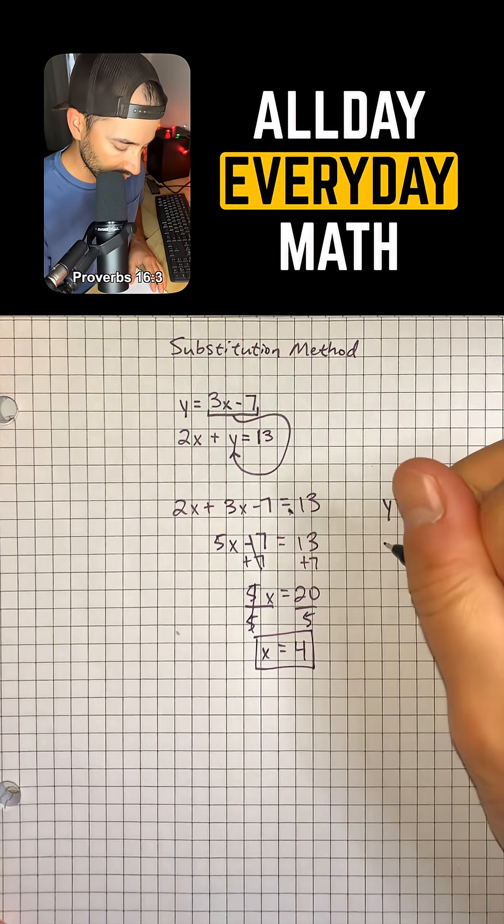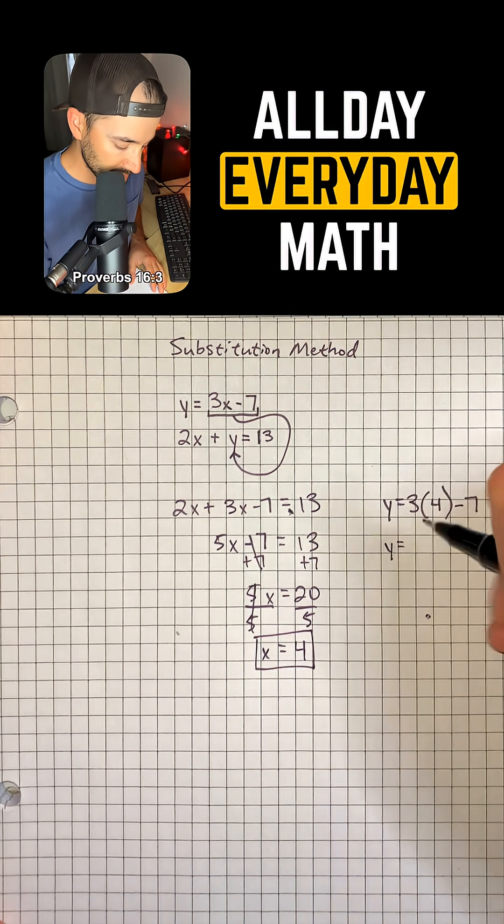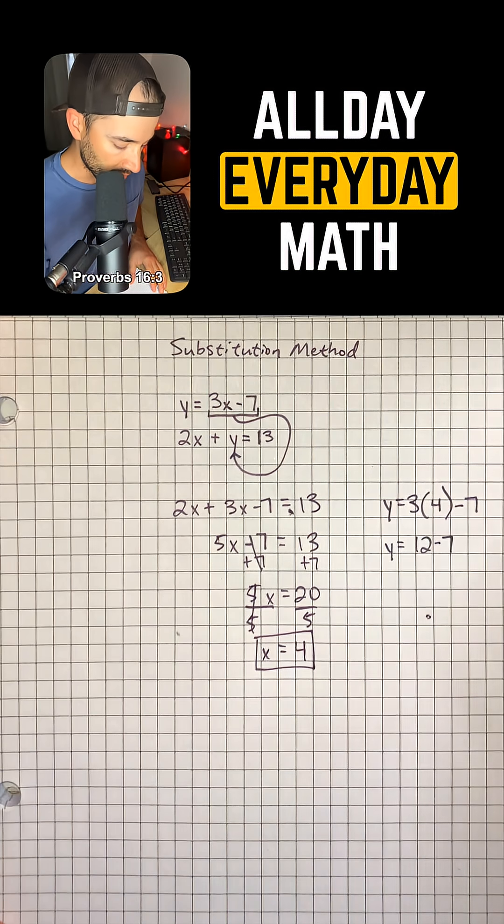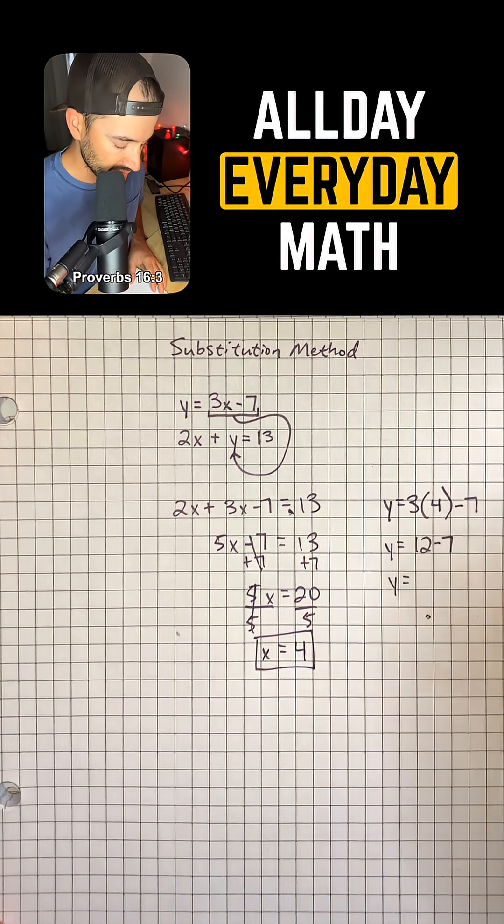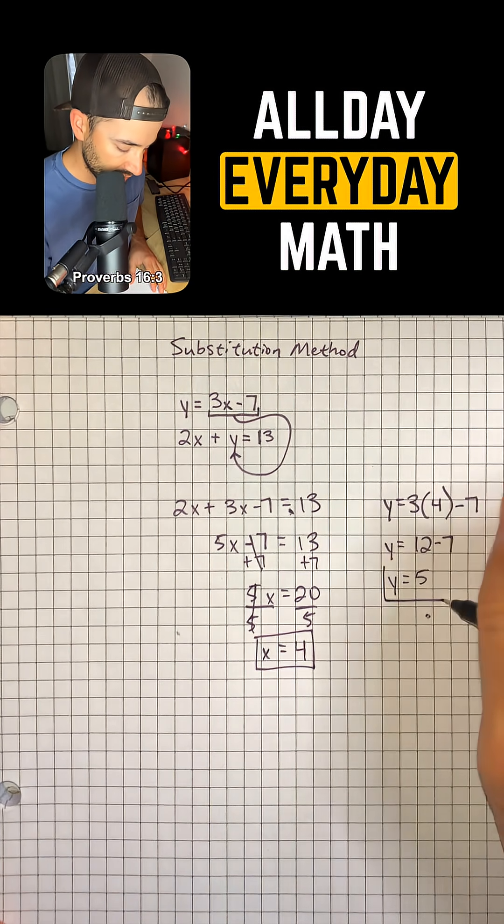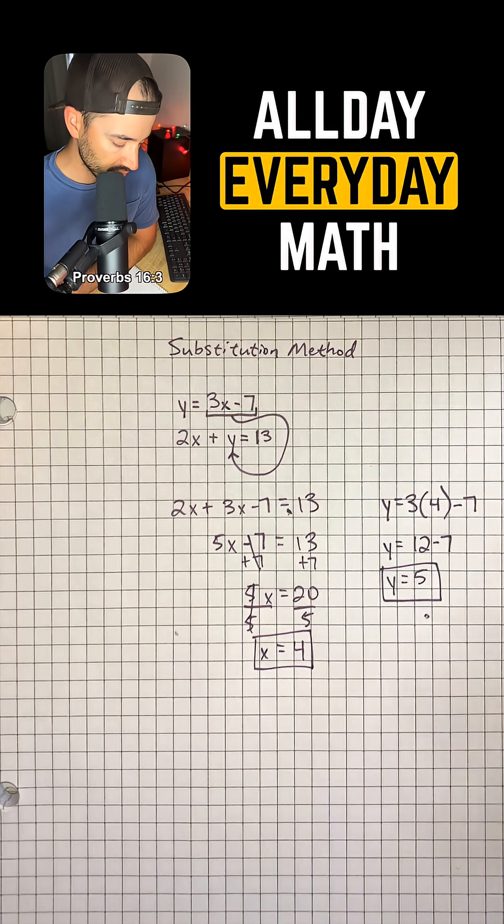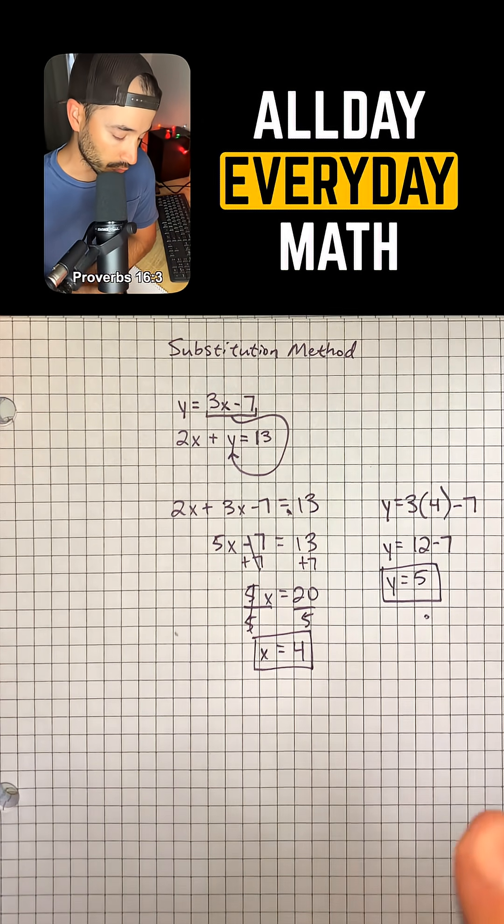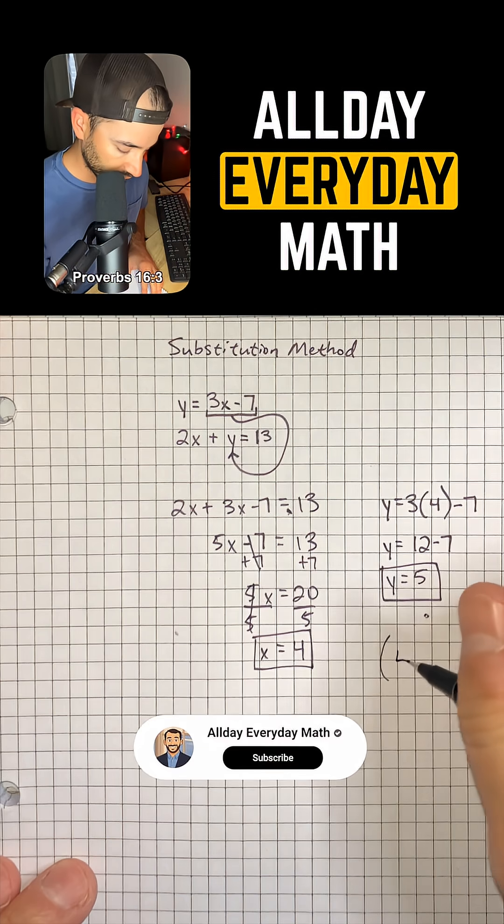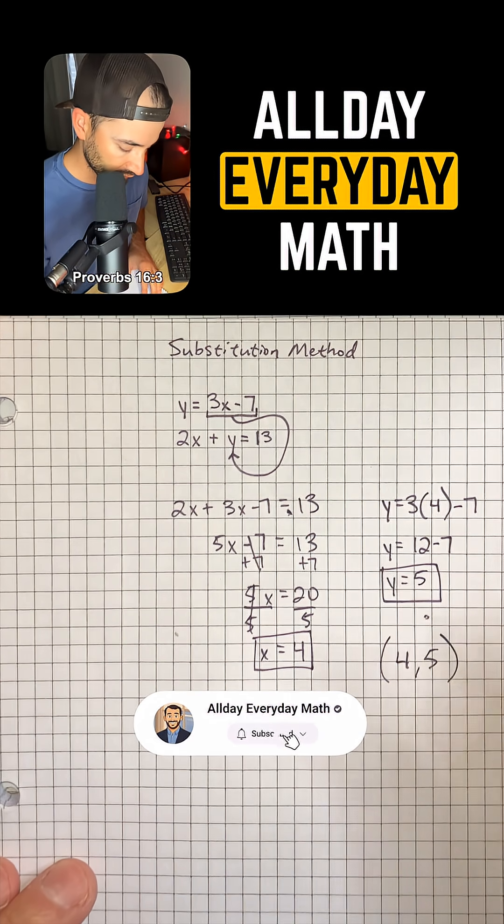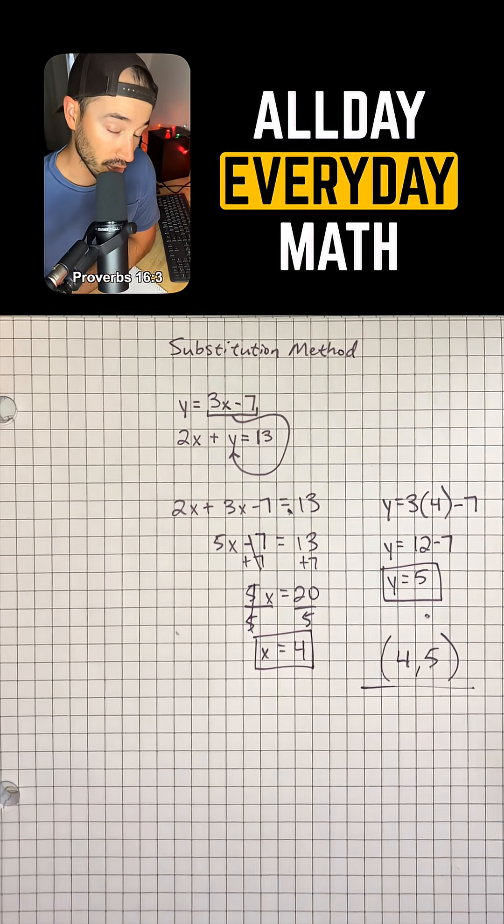And now we just do the math. So y is equal to 3 times 4 is 12 minus 7. So y is equal to positive 5. So that means that our solution to this system of equations is (4, 5) and that would be our final answer.